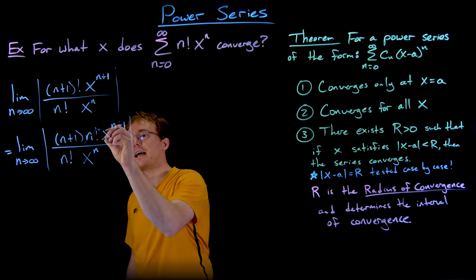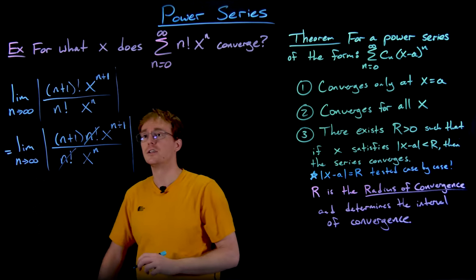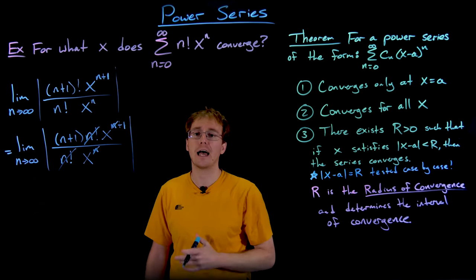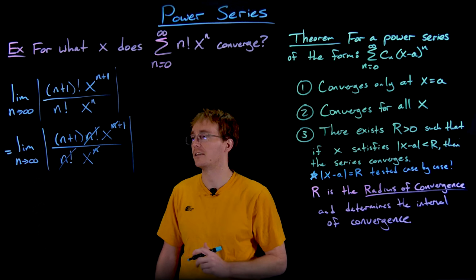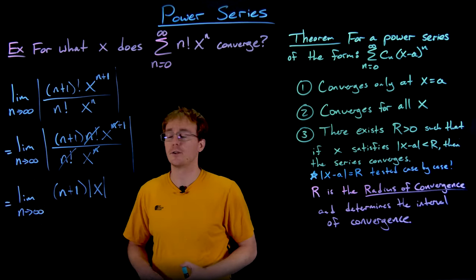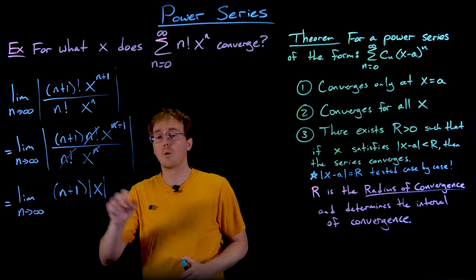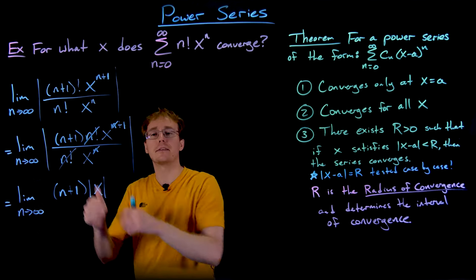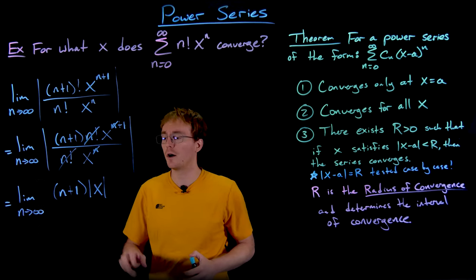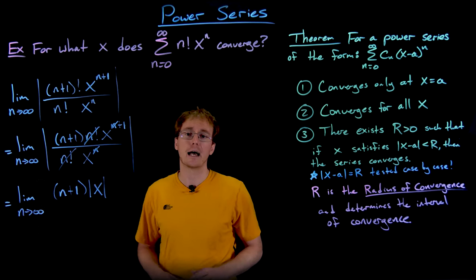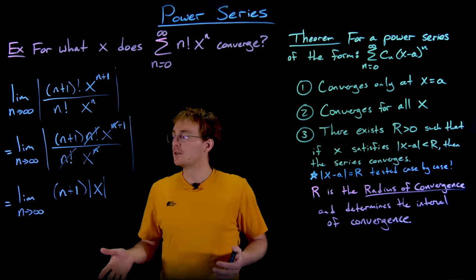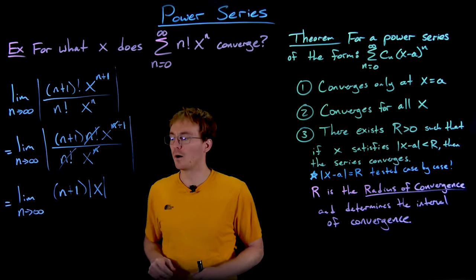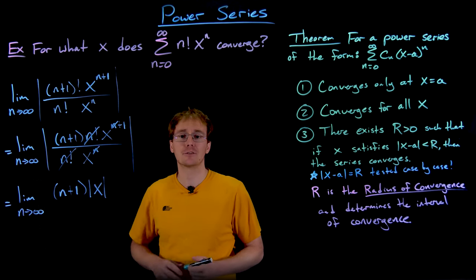We see a common factor of n factorial in the numerator and denominator, so we cancel that out. We also cancel out n common factors of x, leaving just one factor of x in the numerator. Now our limit looks like the limit as n approaches infinity of the quantity (n+1) times the absolute value of x.